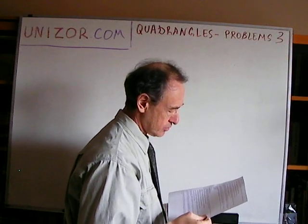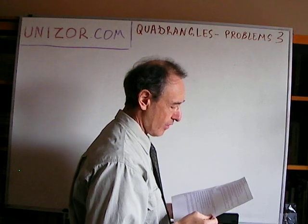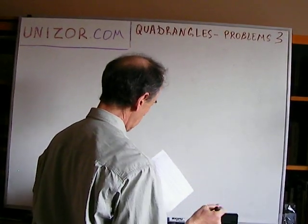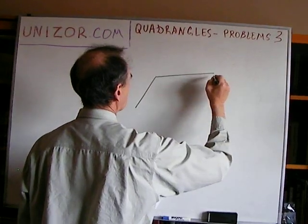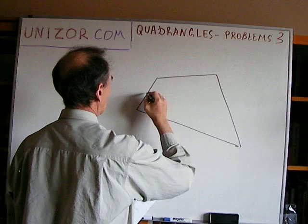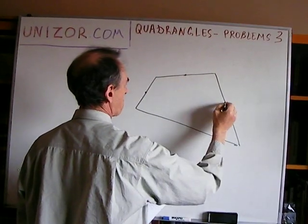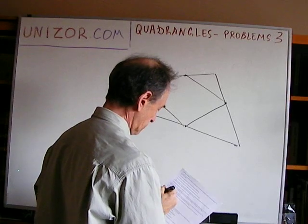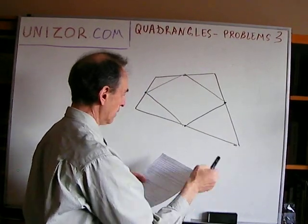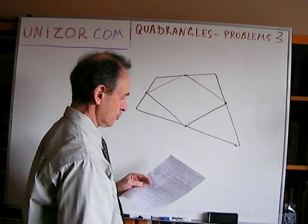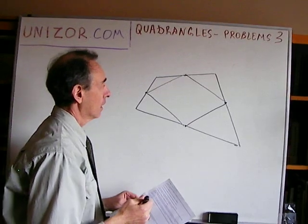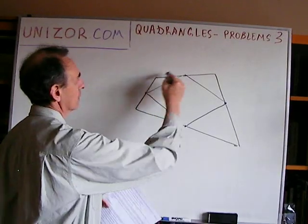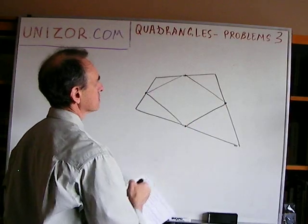What condition should a quadrangle satisfy if a new quadrangle with vertices at the midpoints of each side is to form: a parallelogram, a rhombus, a rectangle, or a square? For parallelogram: no additional condition — for any quadrangle, connecting midpoints always yields a parallelogram.